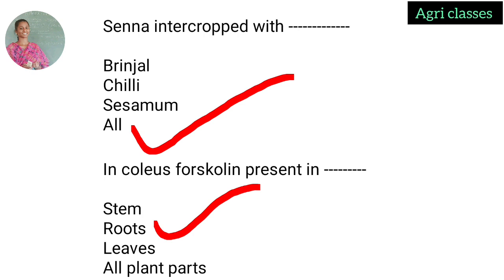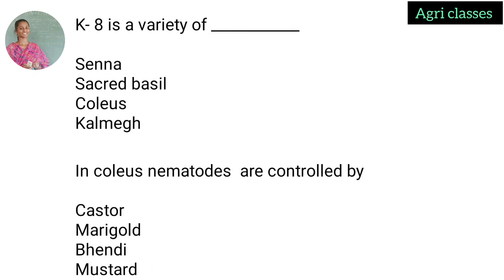Check carefully — alkaloids and their location: whether they are present in leaves, roots, stems, or the whole herb. Next question: K8 is a variety of which crop — Senna, Saccharide bacille, Coleus, or Kalmegh? K8 is a variety of Coleus.